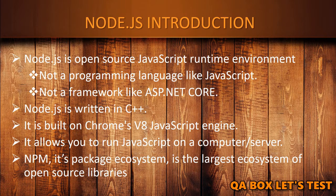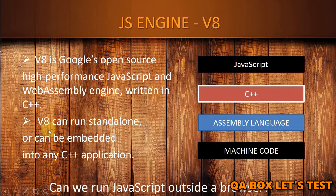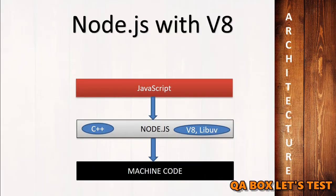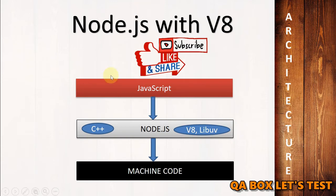Node.js allows you to run JavaScript on a computer or a server. And NPM, its package ecosystem, is the largest ecosystem of open source libraries. The reason we are able to use V8 inside Node is because V8 can run standalone or can be embedded into any C++ application. So Node.js is written in C++ so that you can execute your JavaScript program on a computer. When we write code in JavaScript and run it through Node.js, it is passed to the V8 engine to get converted into machine code which the computer can understand. As you can see in the diagram, V8 is just a part of Node.js.